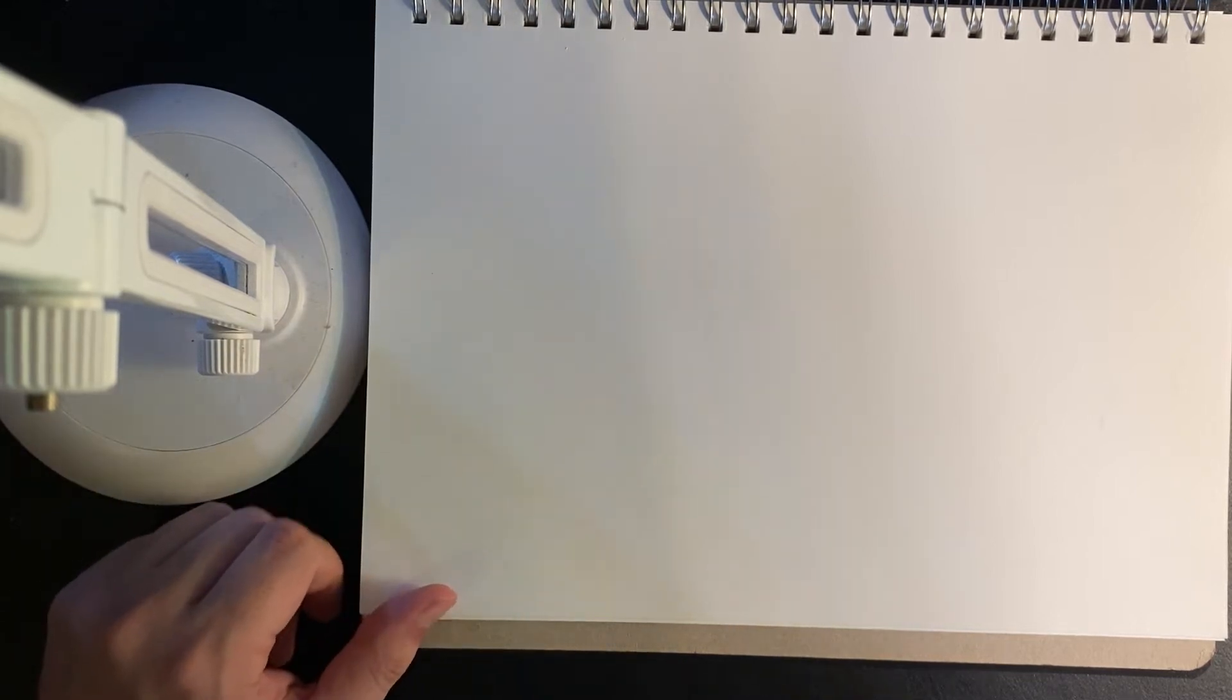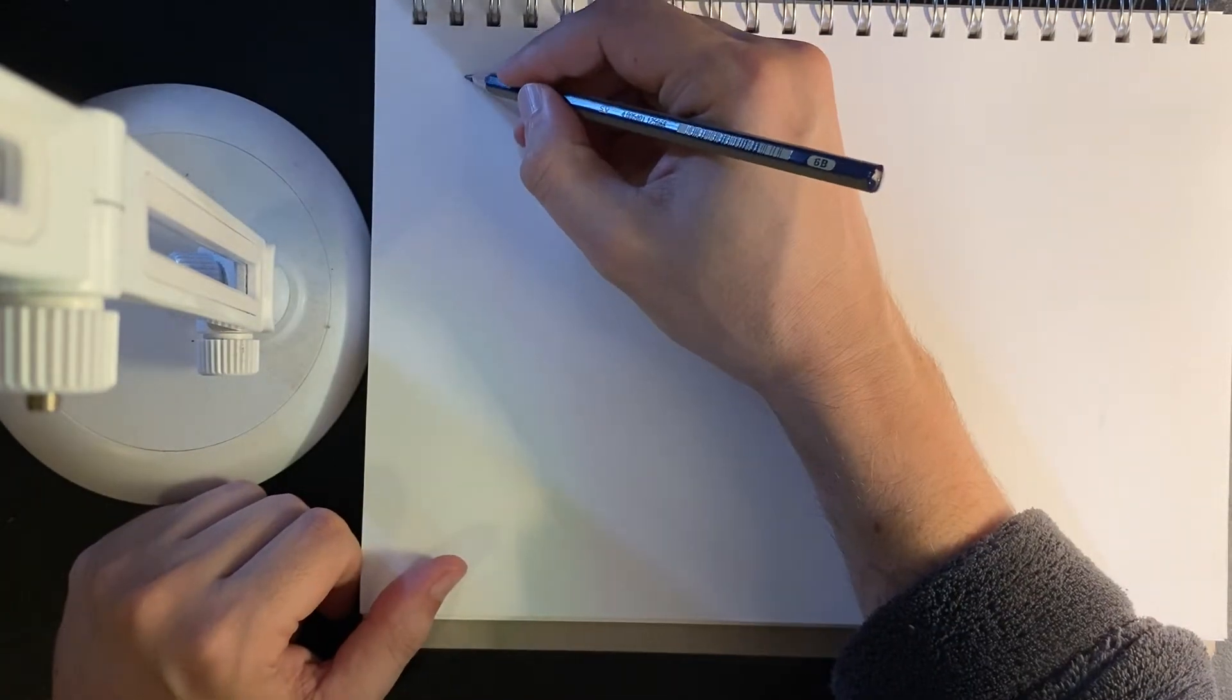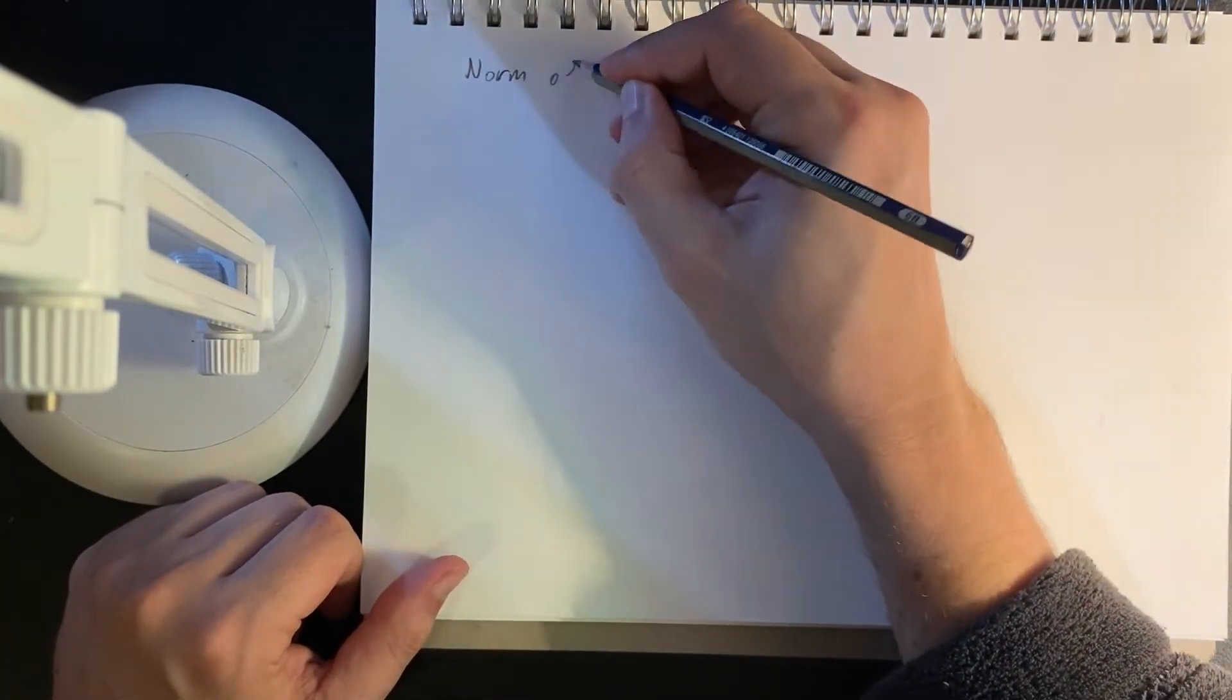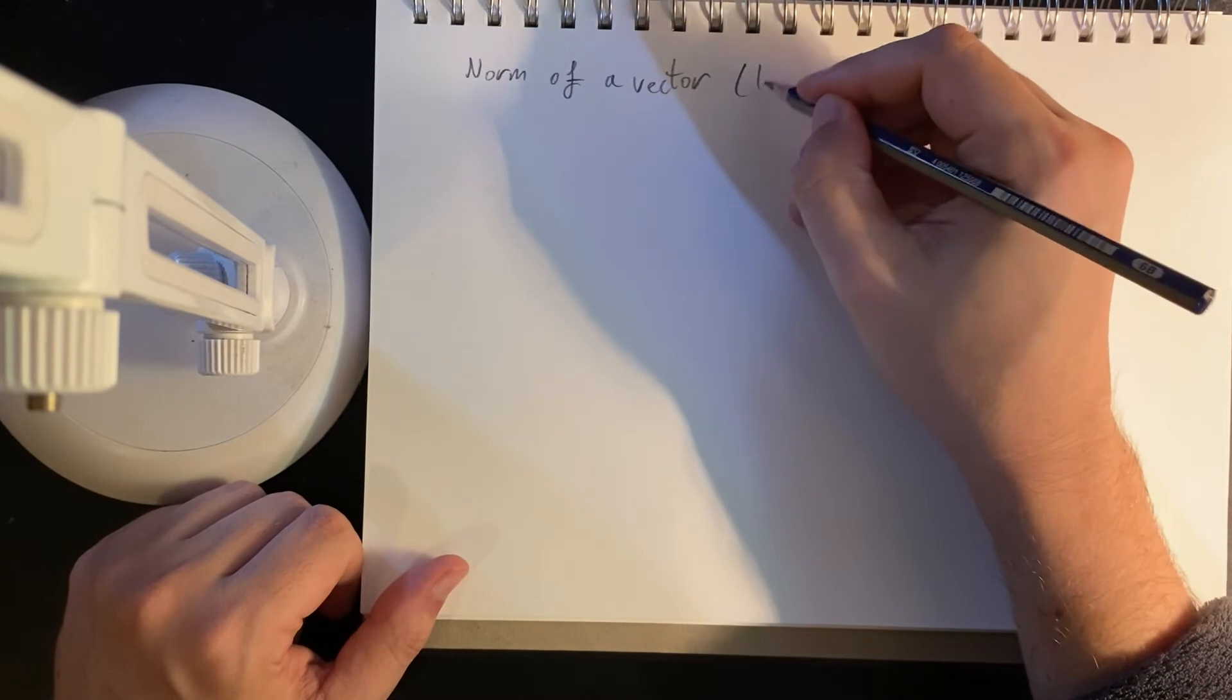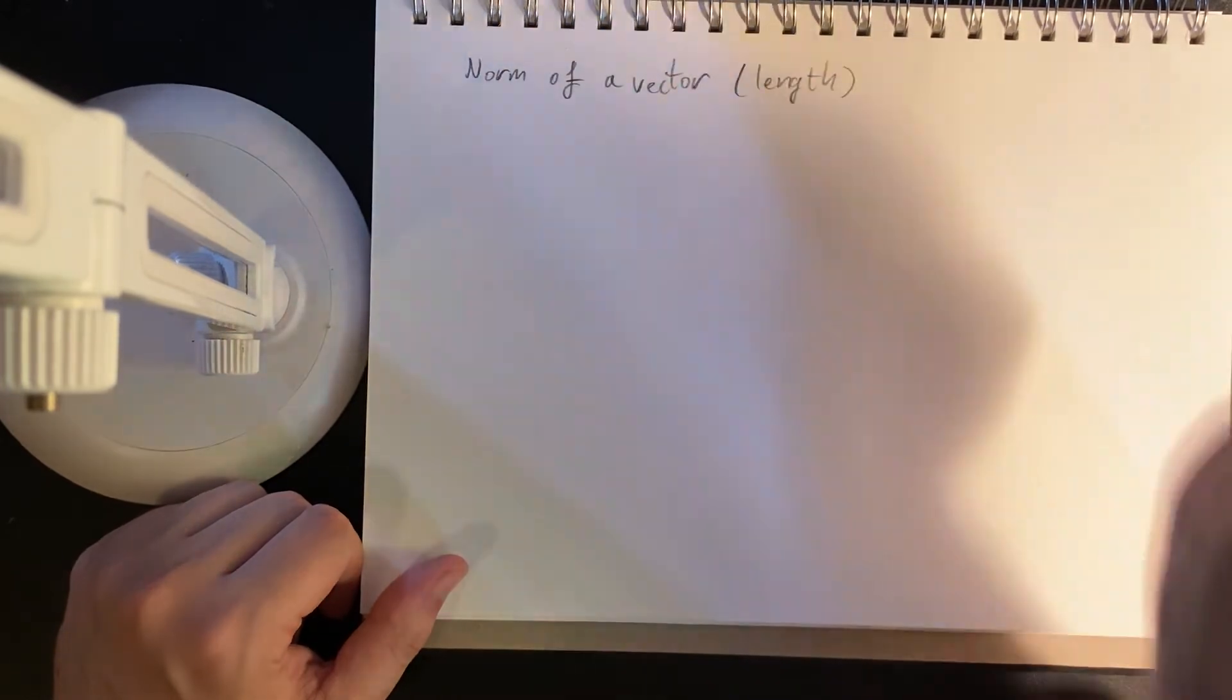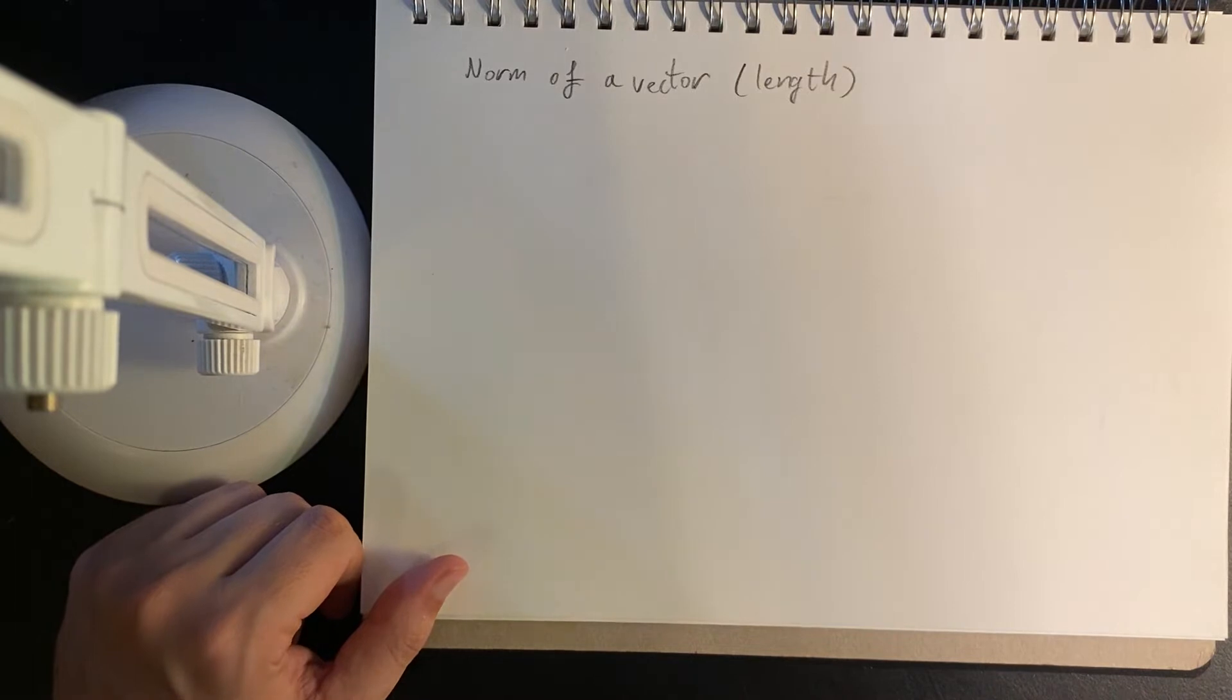So we know what vectors are. Vectors have another property called the norm. And the norm, we can think of it as our idea of physical length.